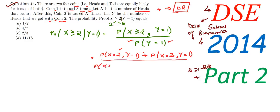The first case: one head in coin 1 and one head in coin 2. Plus: two heads in coin 1 and Y equals 1. Plus: three heads in coin 1 but only one head in coin 2. So basically this is our complete equation for the denominator.